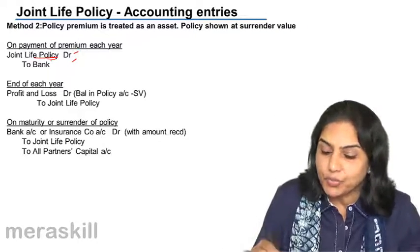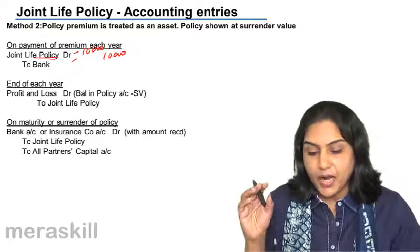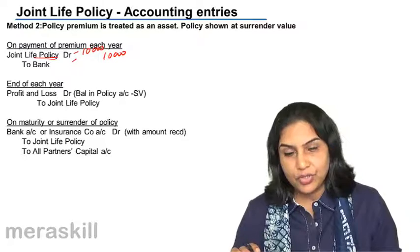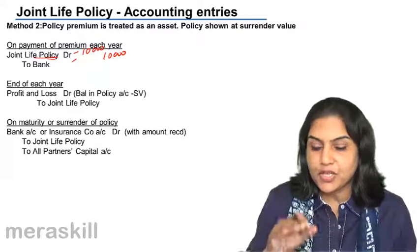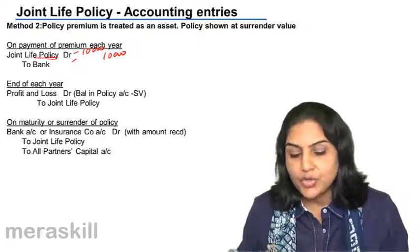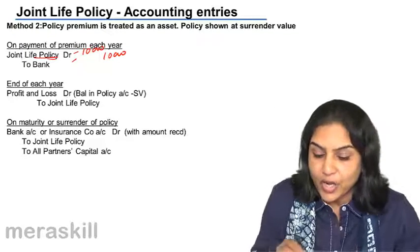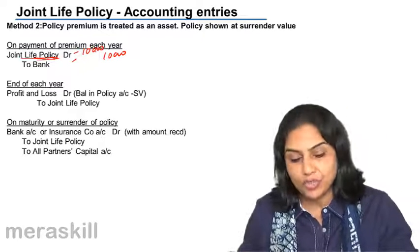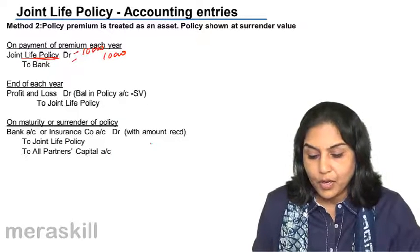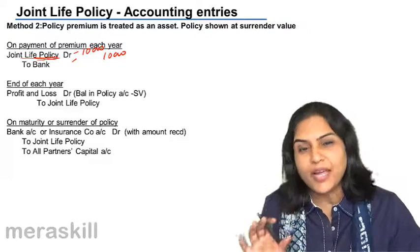Say in our example, suppose we had paid an amount of 10,000. Can we show this asset of joint life policy at 10,000? No, because if we surrender this policy in year one, the surrender value is nil — we get nothing from the insurance company. So it would not be right to show joint life policy account at 10,000. We cannot show the asset in the balance sheet at 10,000. What we do is at the end of each year, we see what is the surrender value and show the joint life policy only at the surrender value.